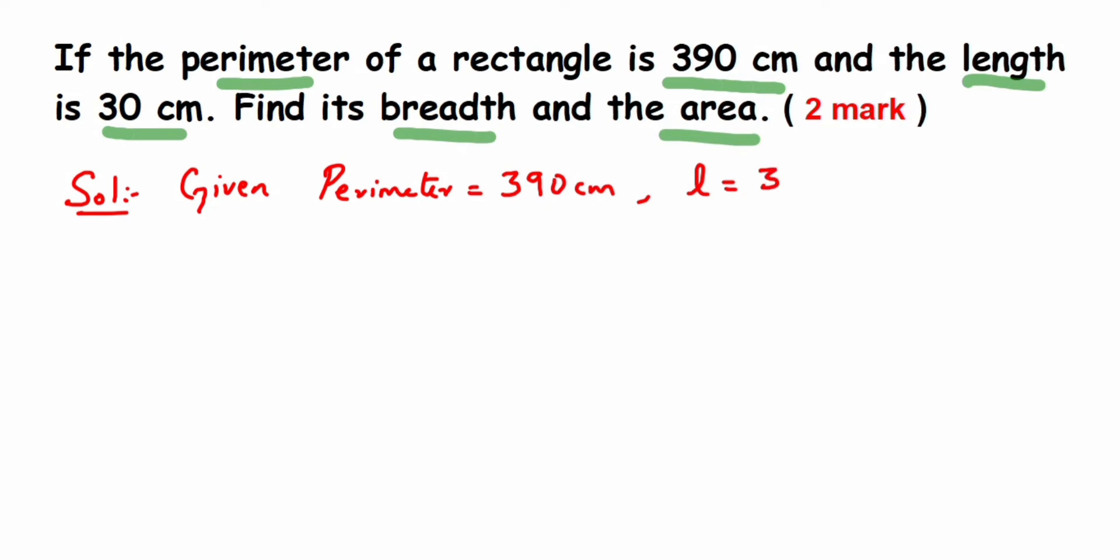First we're going to find out the breadth. I'm going to use the perimeter formula because perimeter is given to us. So we know that perimeter of rectangle, perimeter is equal to 2 into L plus B.